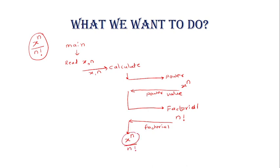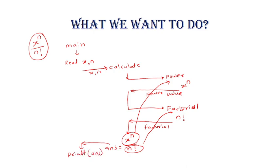This x raised to n I am taking from the power function, and n factorial I am getting from the factorial function. Whatever answer — that is x raised to n divided by n factorial — this answer I want to return to the main program, and in the main program I want to print this value. So from main program we are calling calculate, and from calculate we are calling power function and factorial function. This is called function call within function.